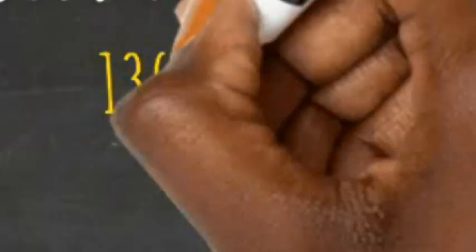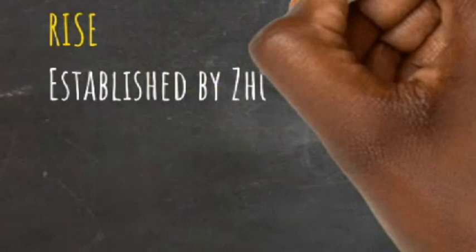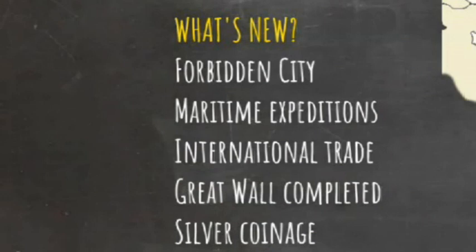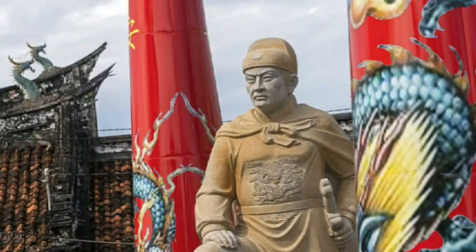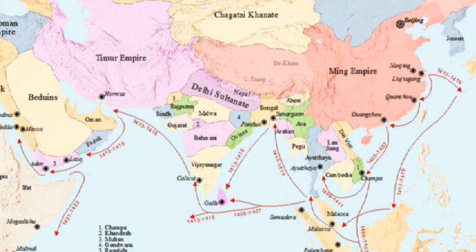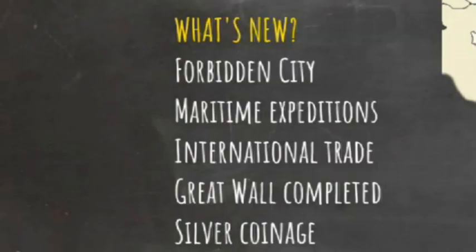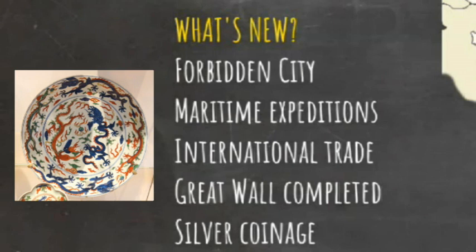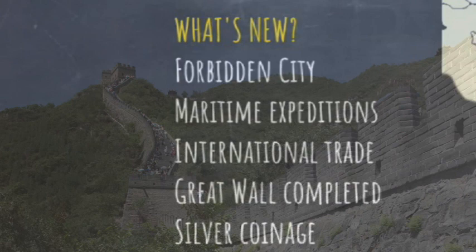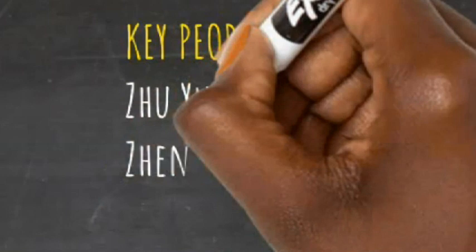Zhu Yuanzhang founded the Ming dynasty, which ruled from 1368 to 1644, putting them in the same period as the Incas and Aztecs, and the rise of the Ottoman and Mughal empires. Zhu Yuanzhang re-established ethnic Chinese rule of China. During the Ming period, many of the finest buildings were built, including the Forbidden City in Beijing. It was a period of expansion and maritime exploration, with Zheng He leading fleets of merchant ships to Indonesia, India, Arabia and Africa. International trade flourished, as seen by the popularity of Chinese porcelain in the West, and China received payment in silver and moved to silver coinage. This was also the period that saw the completion of the Great Wall of China. The Ming were overthrown by a rebellion led by Li Zicheng, with Emperor Chongzhen committing suicide in a park near the Forbidden City when Beijing fell.